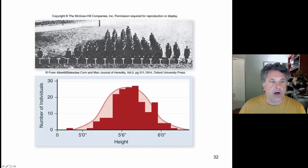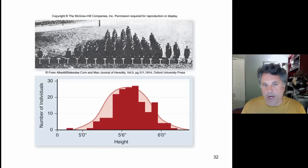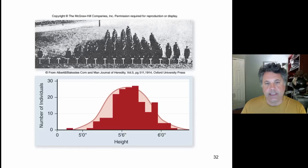Mendel, you will recall, was dealing with discrete phenotypes. So when he looked at tall versus short plants, or purple flowers versus white flowers, or green peas versus yellow peas, he was looking at very discrete phenotypes. But often in nature when we look at the genetic variation that exists, it doesn't separate into discrete phenotypes.